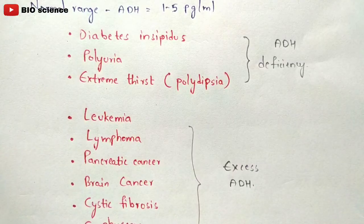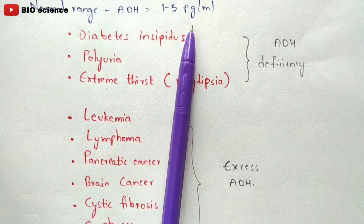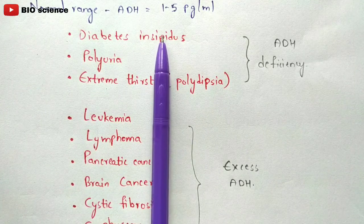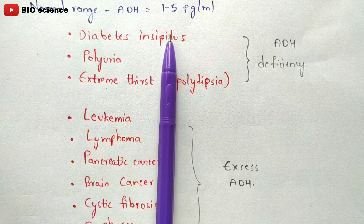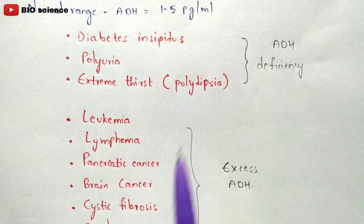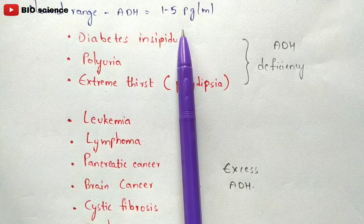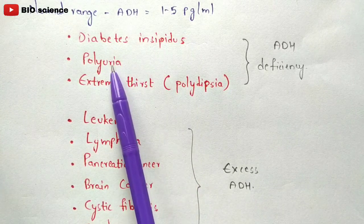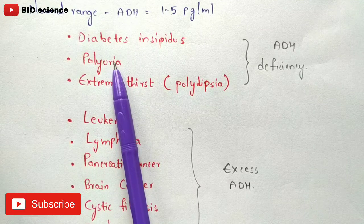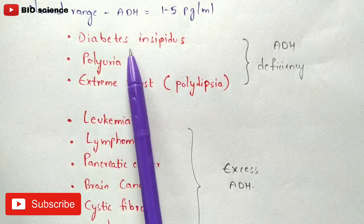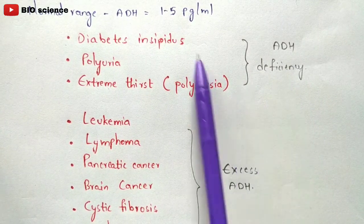The normal range of ADH hormone should be 1 to 5 picograms per ml. If ADH is released at very low levels, symptoms such as diabetes insipidus, polyuria (excretion of excess urine), and extreme thirst — called polydipsia — can be seen.